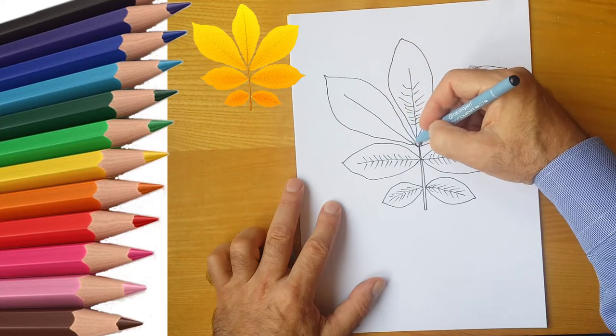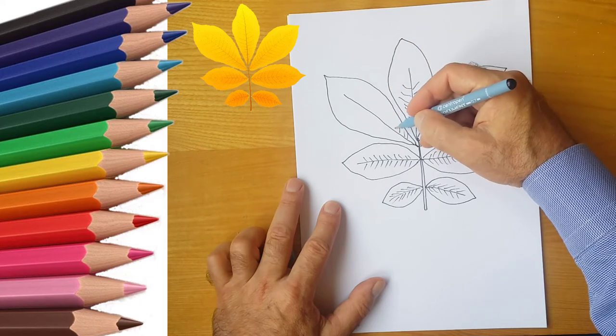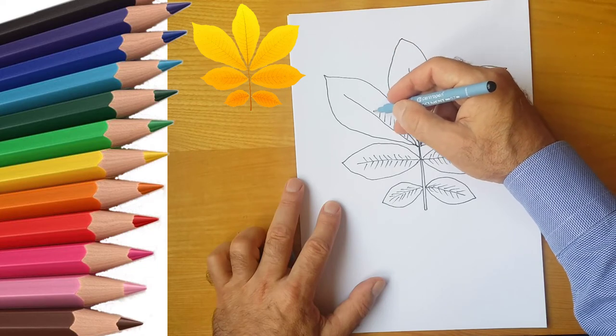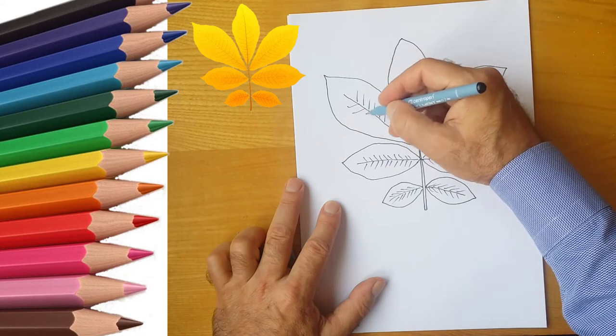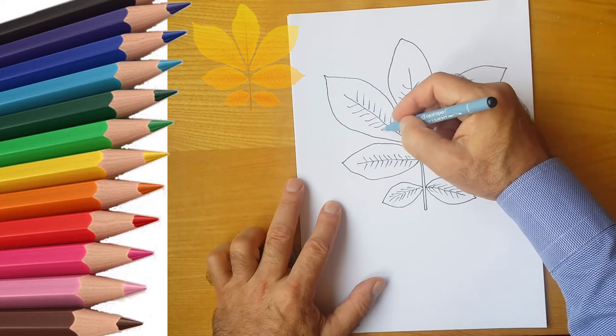Now draw a leaf. You can paint the leaf with green paint, but now it's autumn, and we will paint the leaf yellow and green.